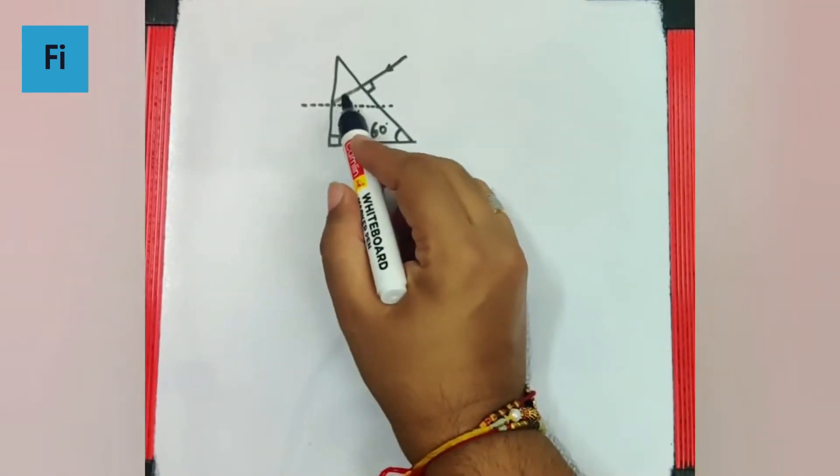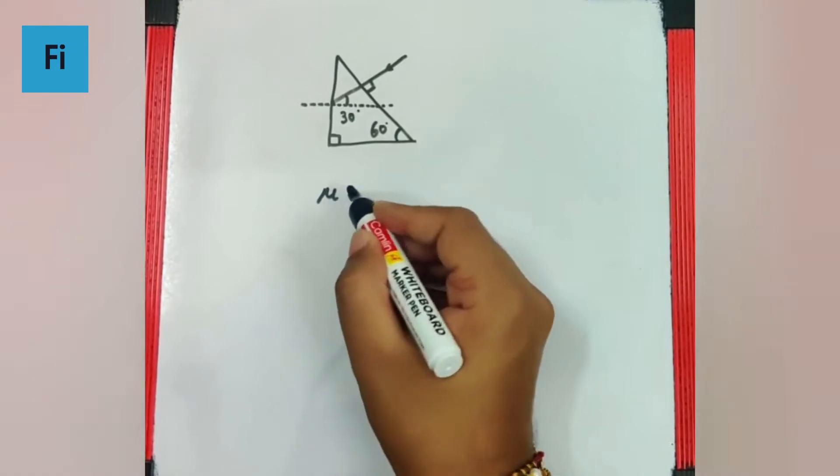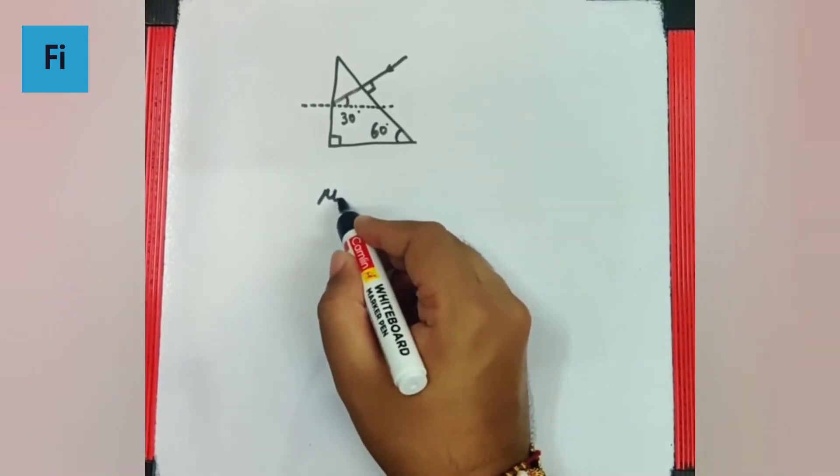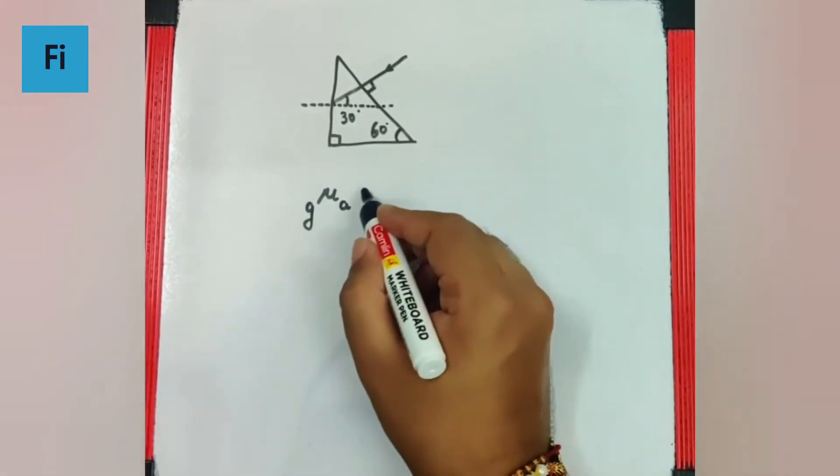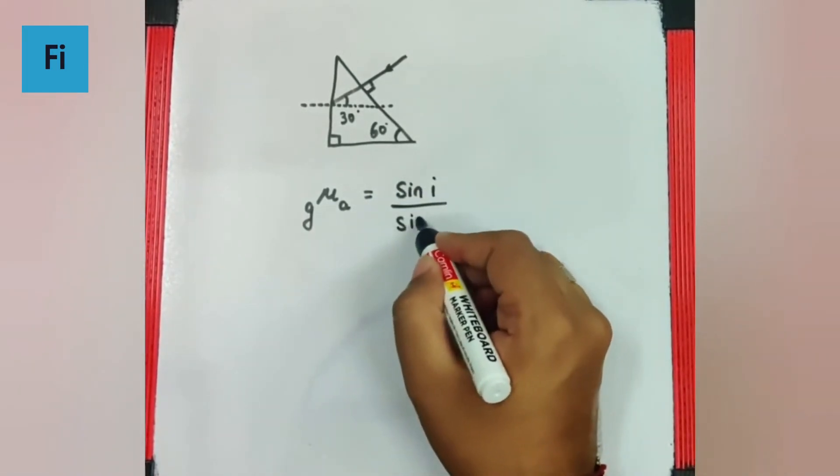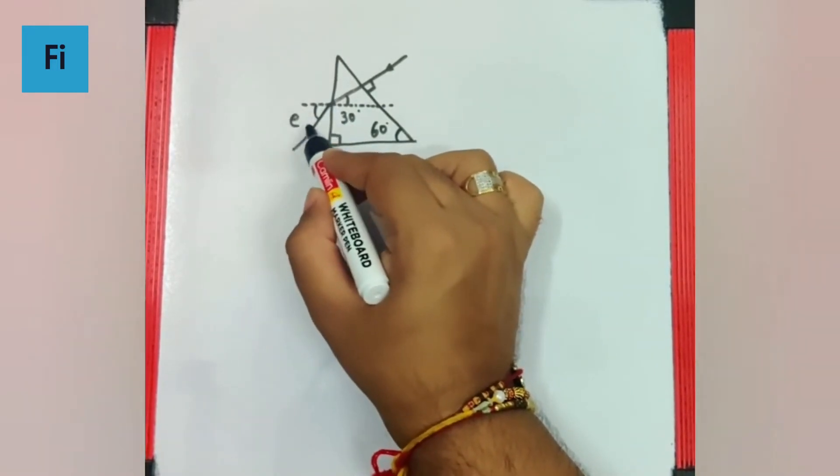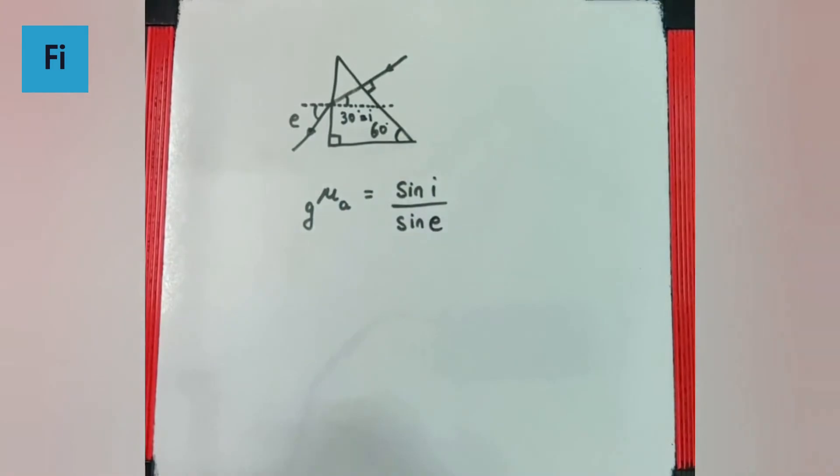Now since the light is going from denser medium to rarer medium, we can say mu of air with respect to glass is sine of i upon sine of e. Definitely this is going to be e and this will become i.